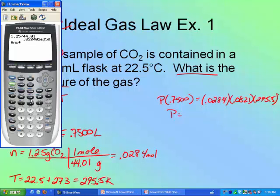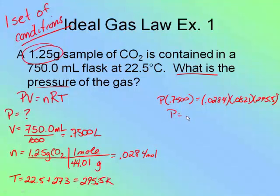So I hit times. It's got my moles already in there. 0.0821 times 295.5. Enter. Divide by the volume, 0.75. And I get 0.91875 atmospheres.